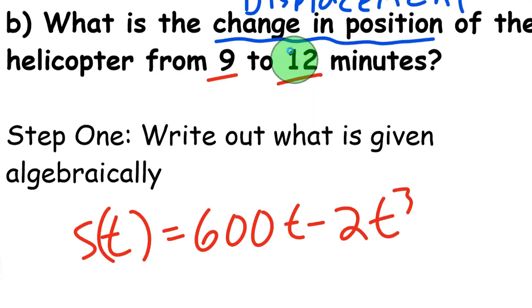What you need to know is change in position—there's a word for that, it's displacement. We're going to see why displacement and total distance traveled aren't the same thing. Notice I've underlined 9 to 12 because these are important numbers we're going to use to solve this problem.